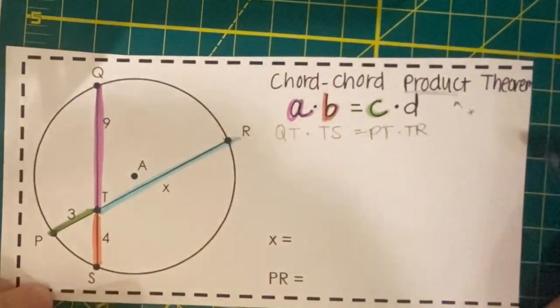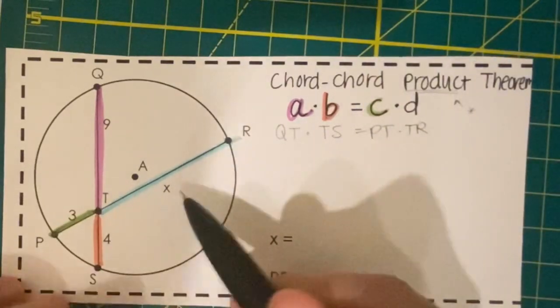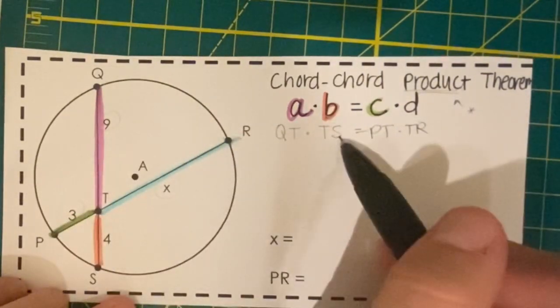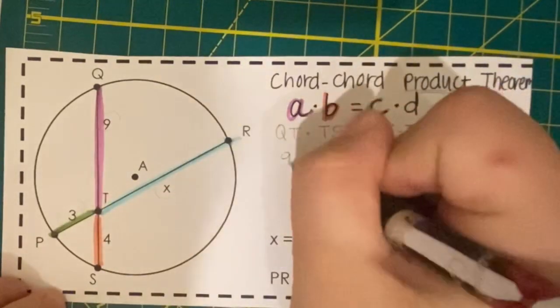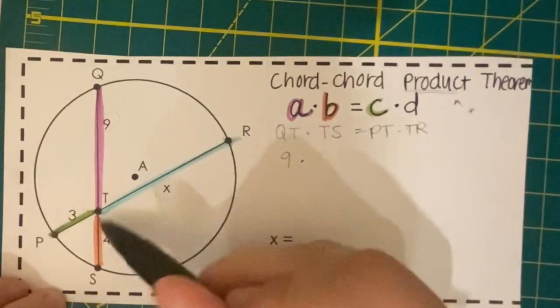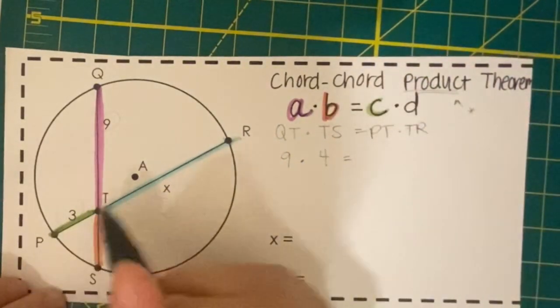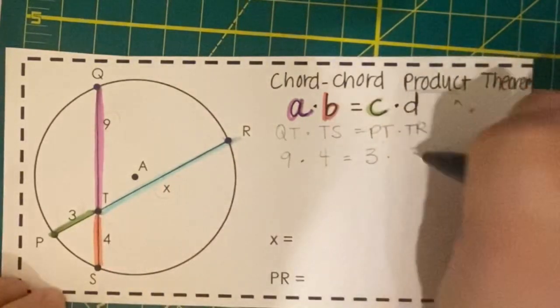Now to use the chord-chord product theorem to solve problems, all we need to do is substitute in these expressions or values given for each segment. So QT has a value of 9, TS has a value of 4, PT has a value of 3, and TR has a value of x.